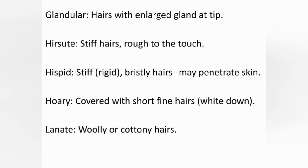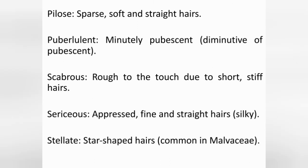Glandular hairs: with an enlarged gland at the tip. Hirsute: stiff hairs, rough to the touch. Hispid: stiff bristly hairs that may penetrate skin. Hoary: covered with short, fine hairs. Lanate: woolly or cottony hairs. Pilose: sparse, soft and straight hairs. Puberulent: minutely pubescent. Scabrous: rough to touch due to short, stiff hairs. Sericeous: appressed, fine and straight hairs. Stellate hairs: star-shaped hairs, commonly present in Malvaceae.